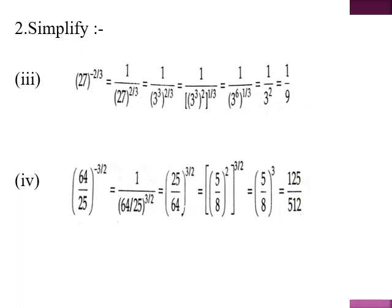Now simplify 27 raised to the power minus 2 by 3. Again there is a negative power, so we take the number to the denominator to make the power positive. Now 27 is 3 cubed — 3 into 3 into 3. We write 27 as 3 cube with power 2 upon 3, multiply: the 3s cancel and 2 remains. So it becomes 1 upon 3 raised to the power 2, and 3 squared is 9, giving the answer 1 by 9.